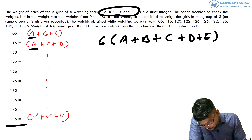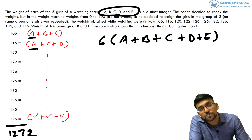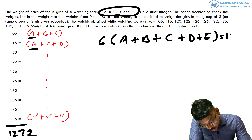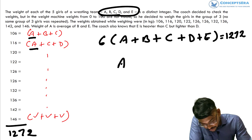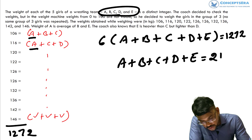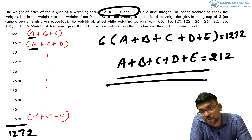The summation of all these group weights is 1272. So we get: A + B + C + D + E = 1272 ÷ 6 = 212. This gives us our first equation.